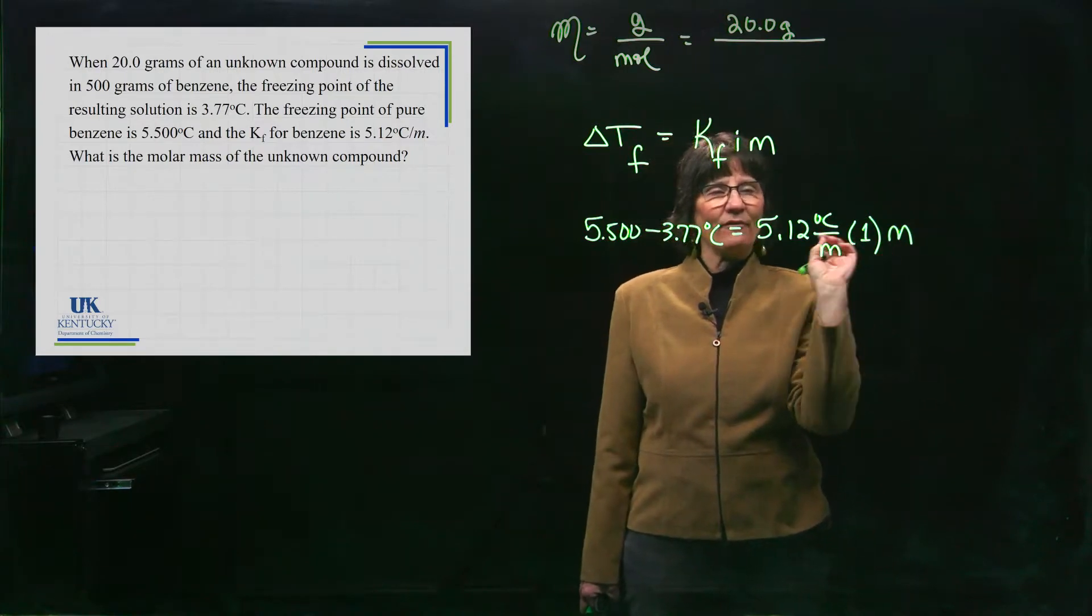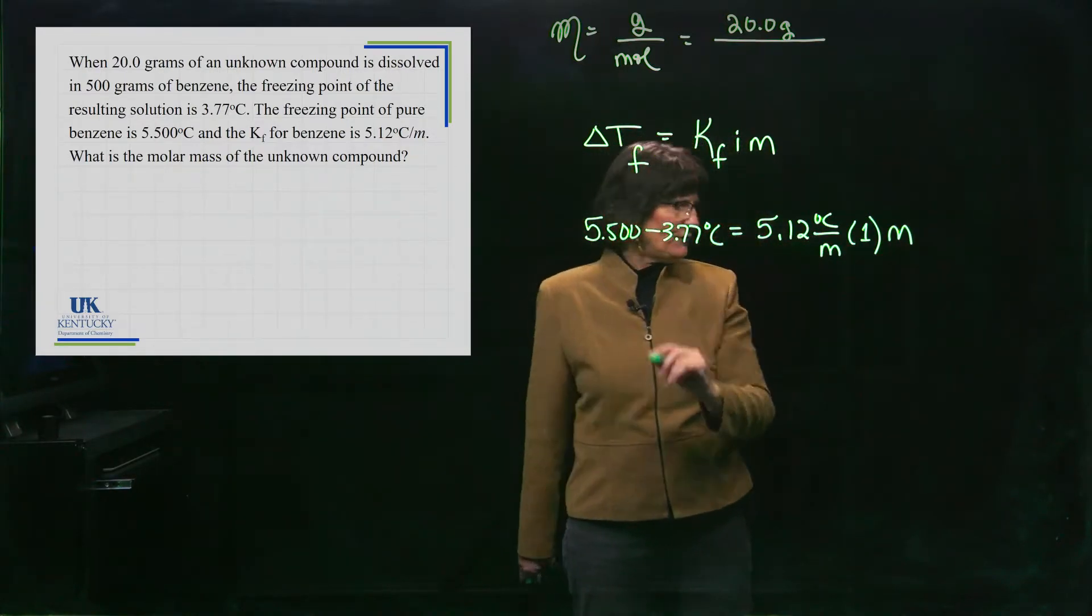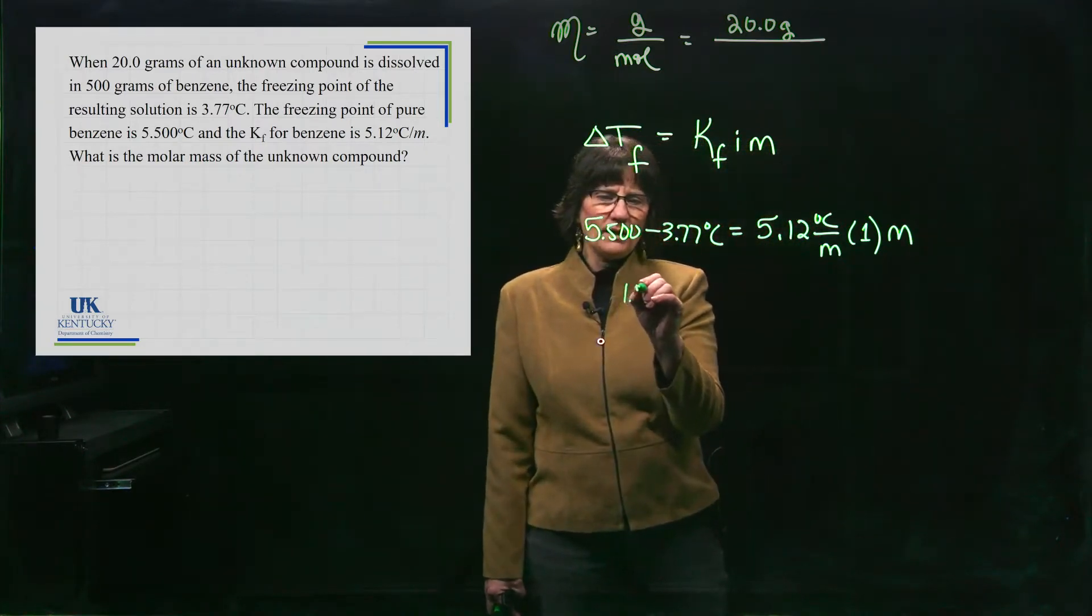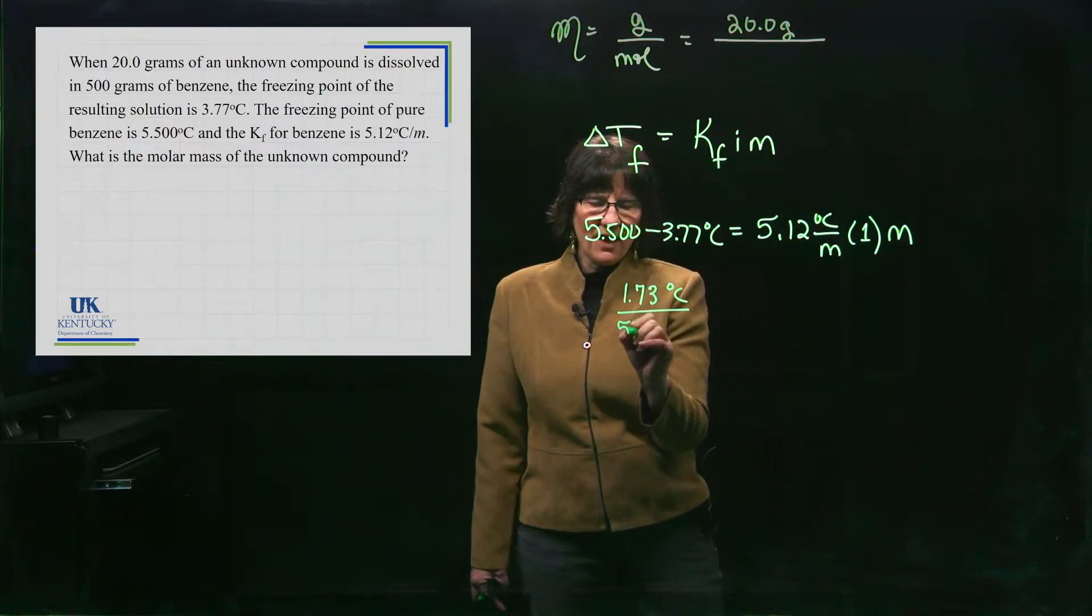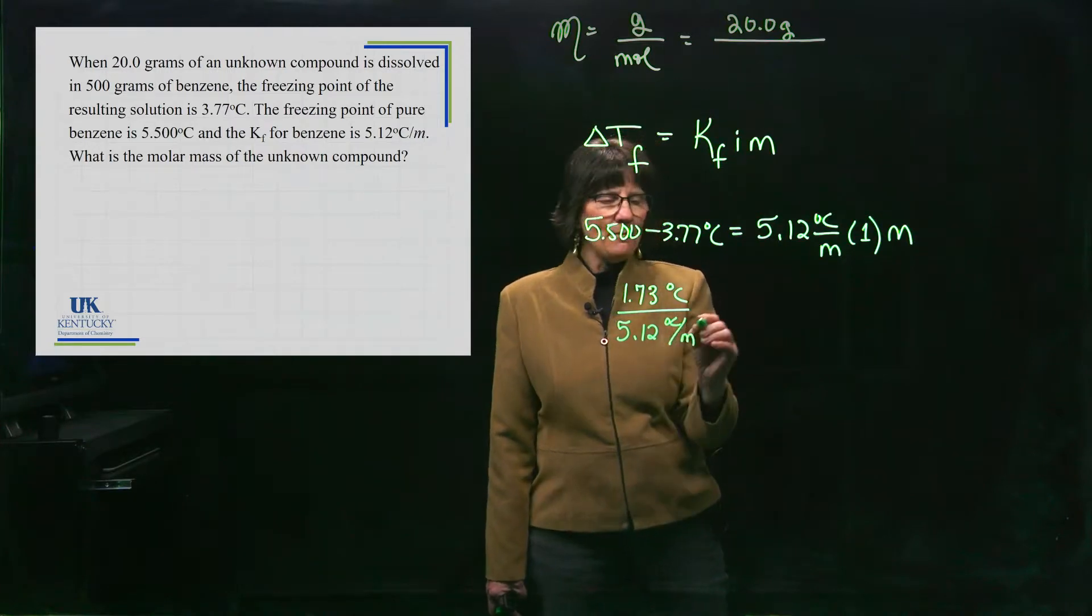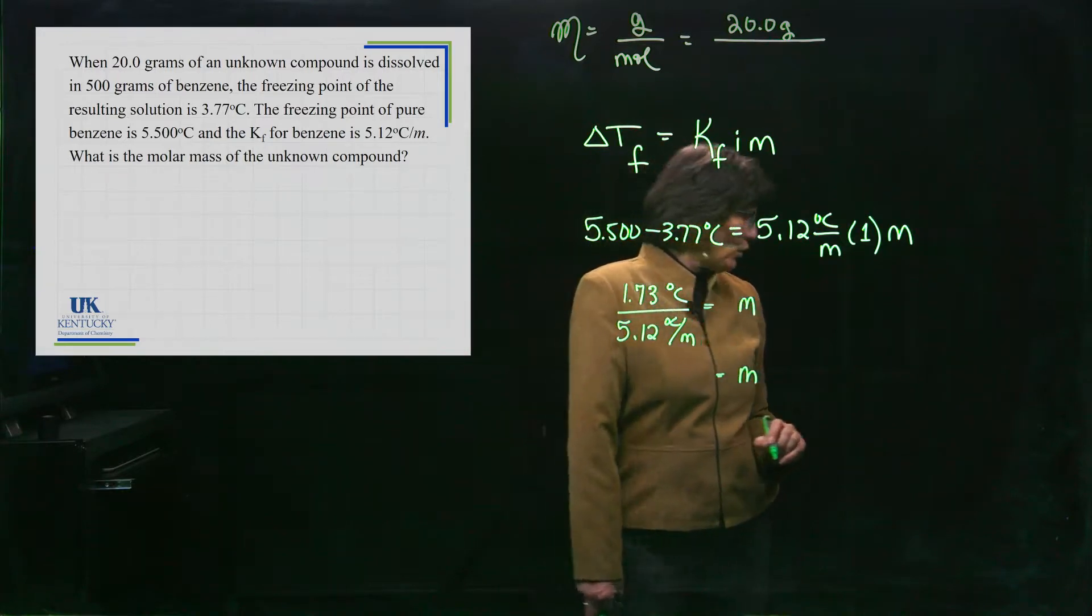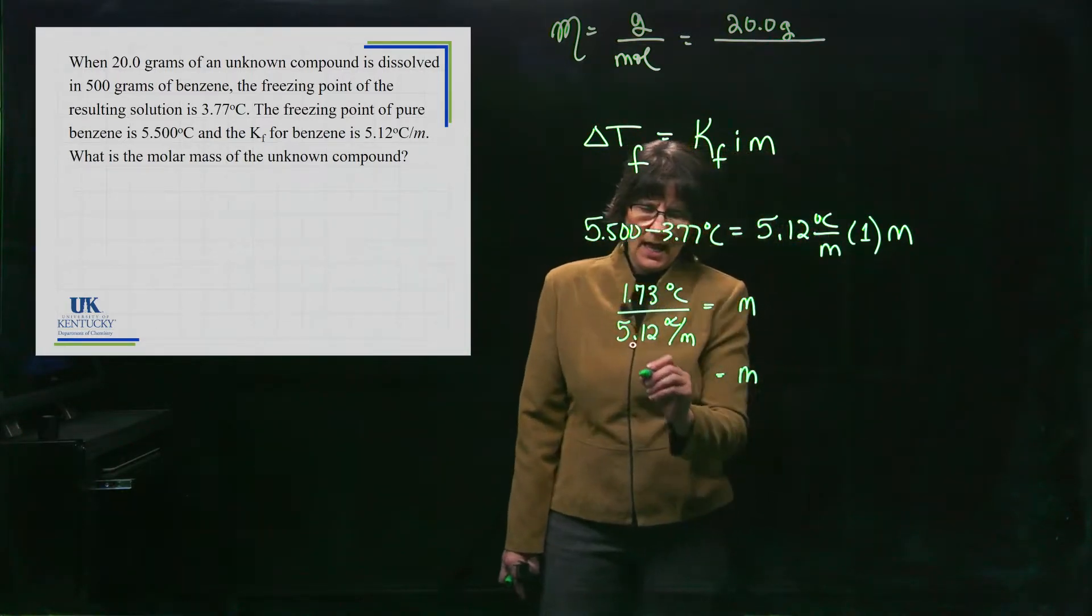Because molality will have moles inside of it. So when I take this difference, when I subtract those two, I have 1.73. And I divide by the 5.12 degrees Celsius per molal. I'm going to get my m value equal to, what is it? It is 0.338.